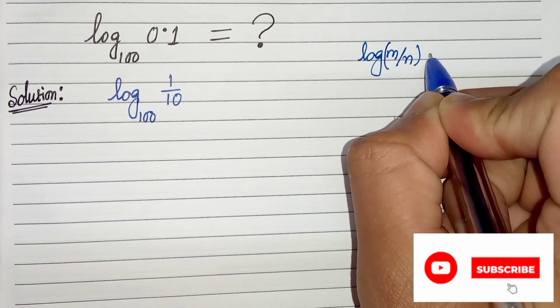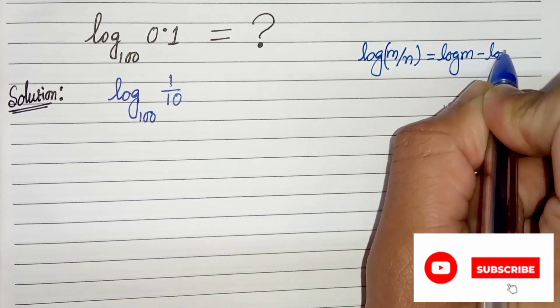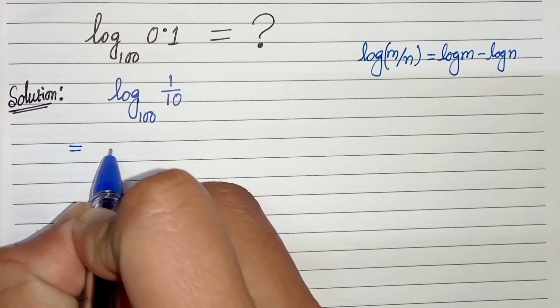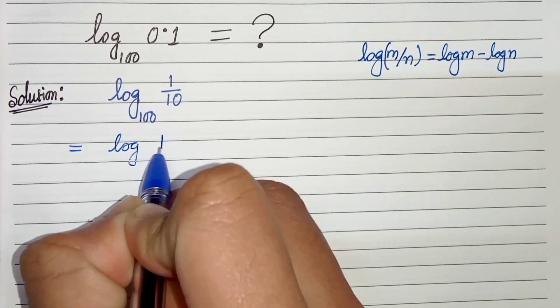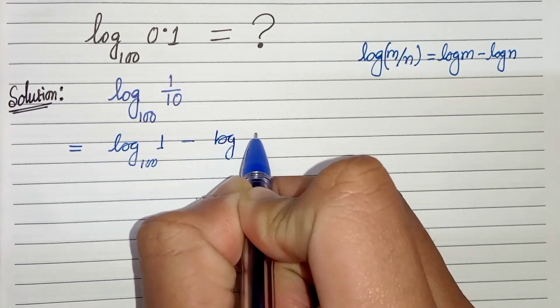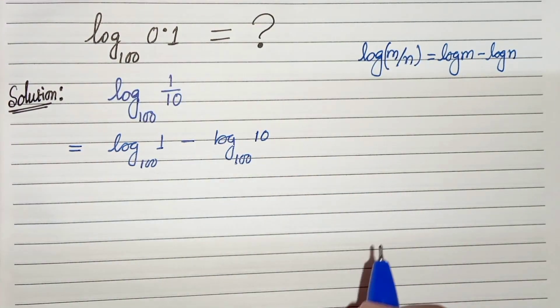So let's apply this here. We will get log of 1 with the base as hundred minus log of 10 with the base as hundred. We know that log of 1 is 0, so we have 0 minus log of 100 can be written as 10 square and it is 10.